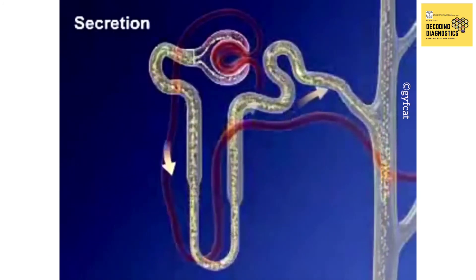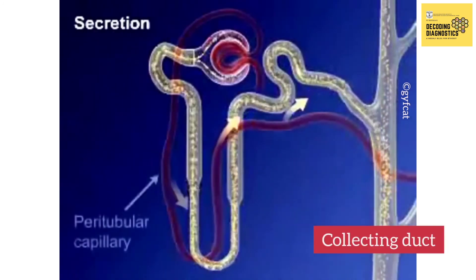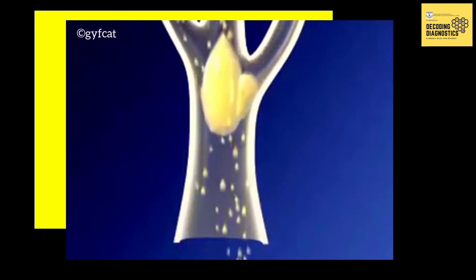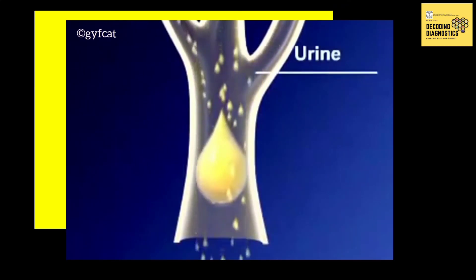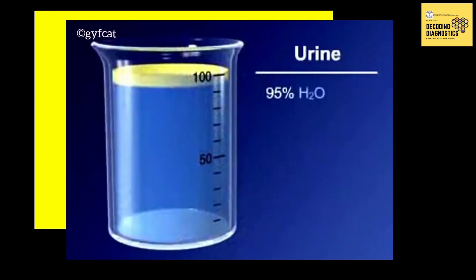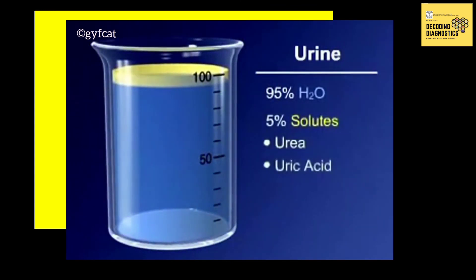The end product of all these processes is urine, which is a collection of substances that have not been reabsorbed during glomerular filtration or tubular reabsorption.